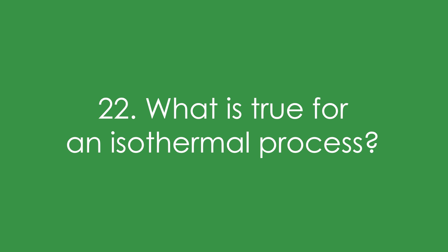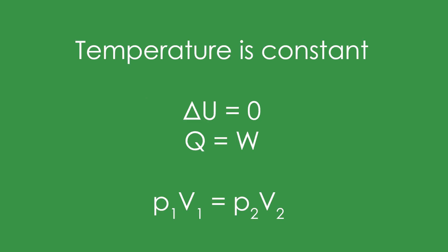Question 22: What is true for an isothermal process? Isothermal means temperature is constant, so ΔU = 0 and Q = W. In that case, PV is constant.